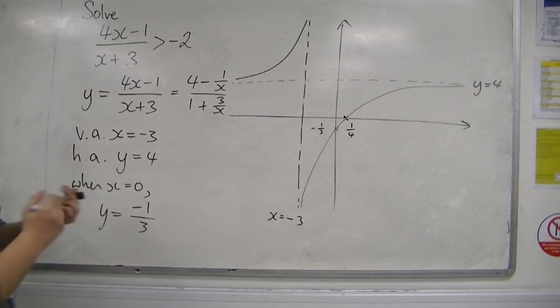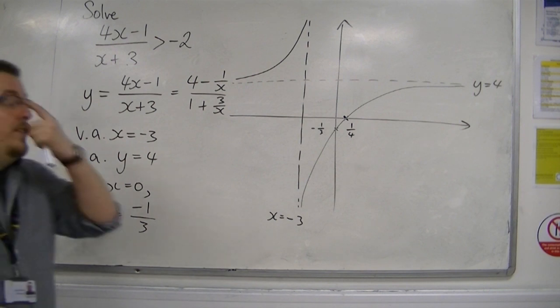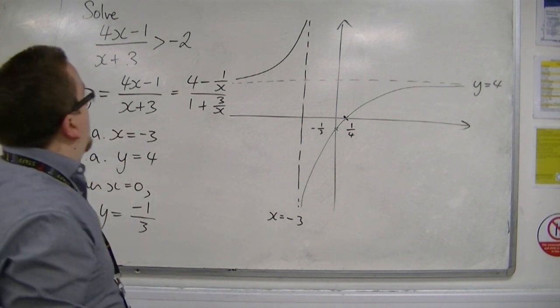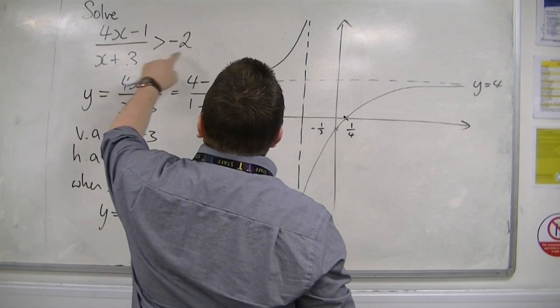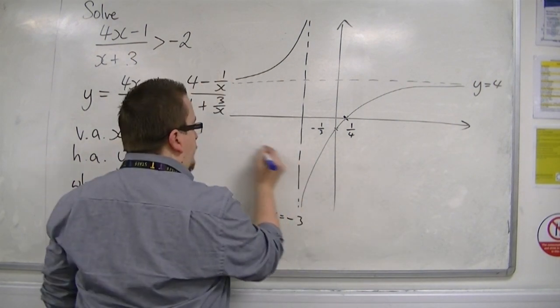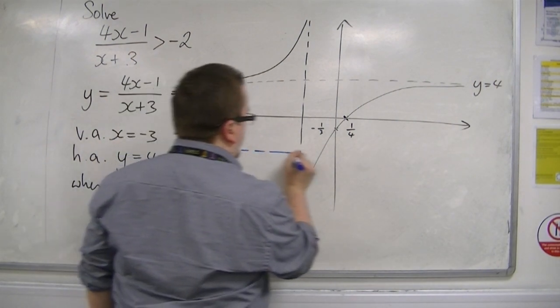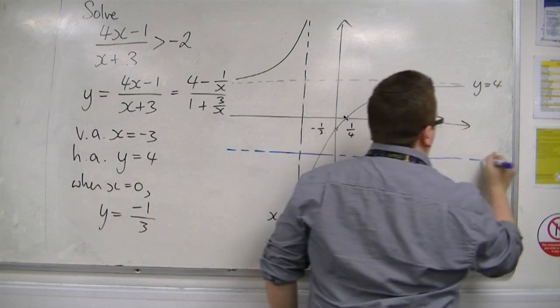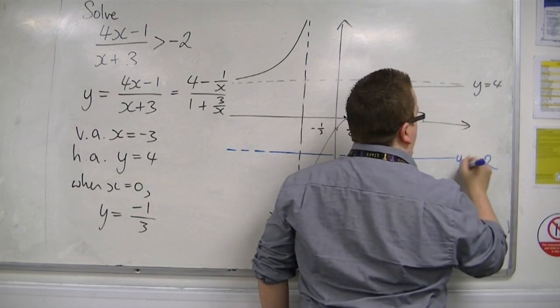Now, I want to know where this is greater than the line, so greater than minus 2. So minus 2 is this line, y equals minus 2.